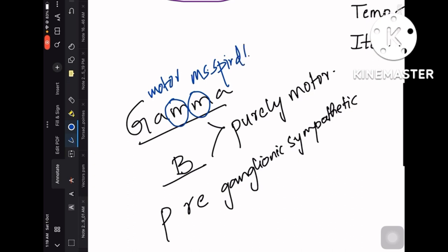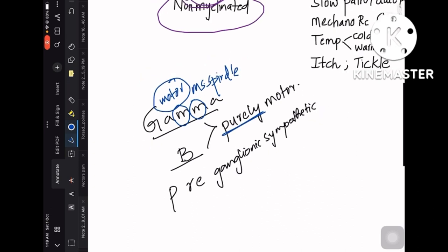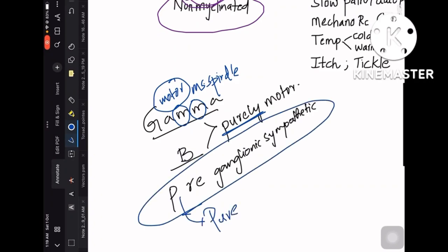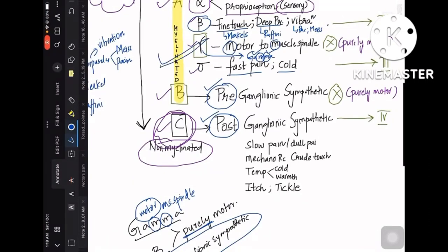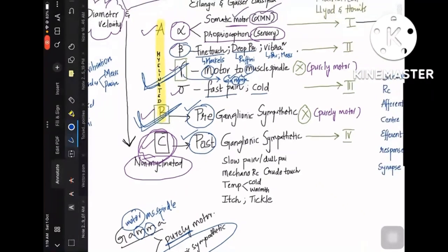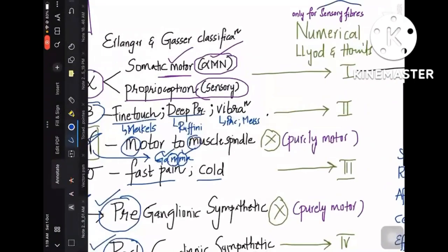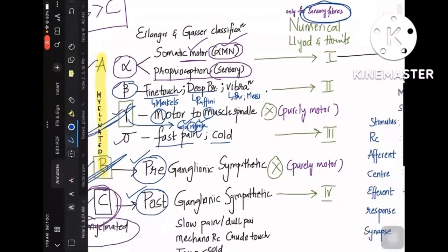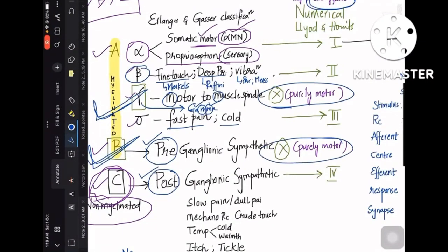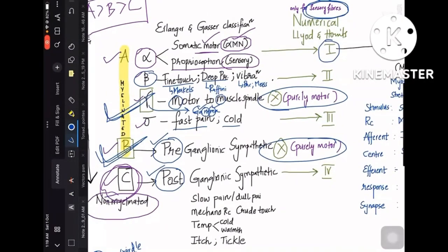A-gamma is purely motor to the muscle spindle — the name itself contains 'motor.' Preganglionic sympathetic B fibers are also purely motor — remember it as 'pure ganglionic' by inserting a 'u' into 'pre.' These two — A-gamma and B — are purely motor, and this matters because the numerical Lloyd's classification covers only sensory fibers. So A-gamma and B are excluded. Mapping the rest: A-alpha = Type I, A-beta = Type II, A-delta = Type III, and C = Type IV. A common exam question asks which fibers are not included in the numerical classification — the answer is A-gamma and B.